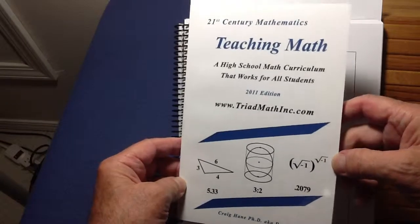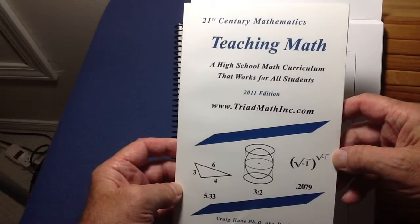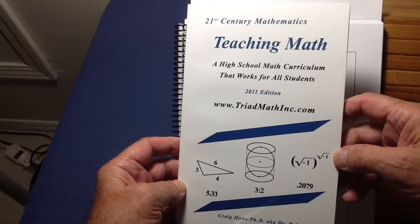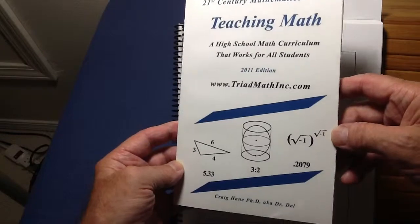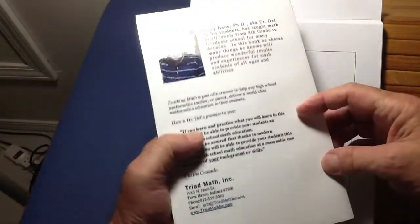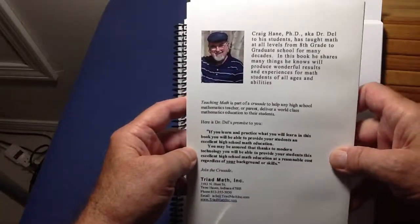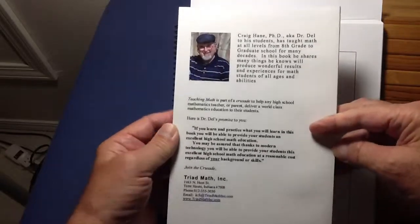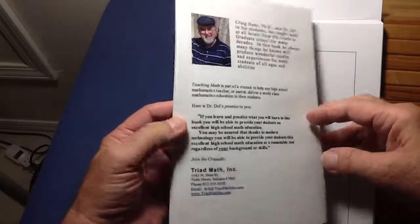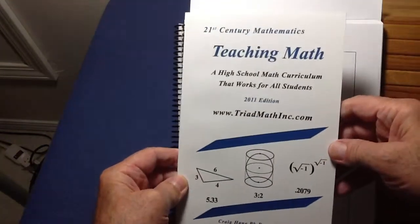This is my opus, so to speak, on teaching math. It explains what is wrong with our current math curriculum that everybody's trying to use today, not very successfully in most cases. And it tells all about that. Of course, this is me on the back. You can learn all about me. If you go to my website, craighane.com, you're going to get my vita, see who I am and where I come from, and what my background is and why I believe what I believe. And I will give you a free copy of this book in PDF format.